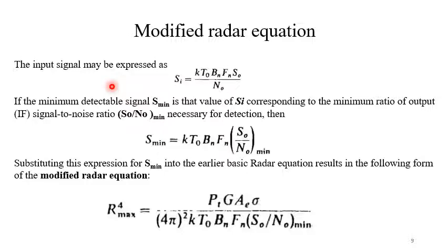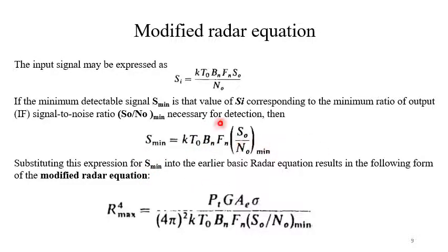Now we modify the radar equation. The input signal may be expressed as S_I = K·T₀·B_N·F_N·(S₀/N₀). If the minimum detectable signal S_min is that value of S_I corresponding to the minimum output IF signal-to-noise ratio (S₀/N₀)_min necessary for detection, then S_min = K·T₀·B_N·F_N·(A₀/N₀)_min. Substituting this into the radar equation gives the modified radar equation: R⁴_max = (P_T·G·A_E·σ) / [4π²·K·T₀·B_N·F_N·(S₀/N₀)_min].